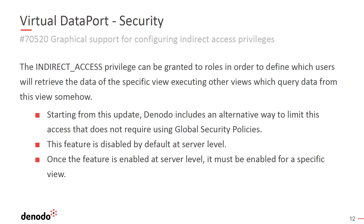Finally, at the role level, we can configure the privilege by navigating to Administration, Role Management, and selecting a role and clicking on the Assign Privileges button. Click on the Edit button of the Advanced Privileges column for the database, and then we can click on Indirect Access of a column for the element that we'd like to restrict.